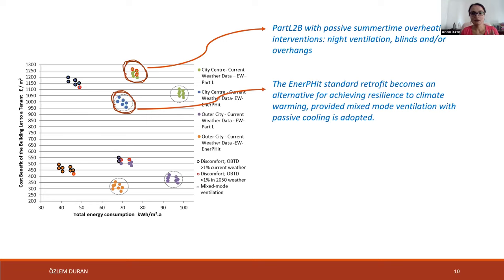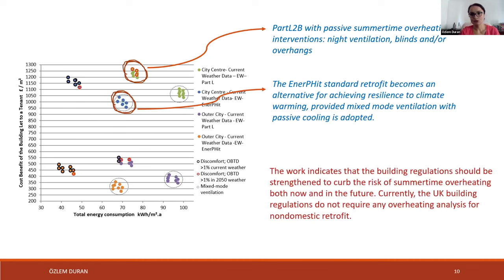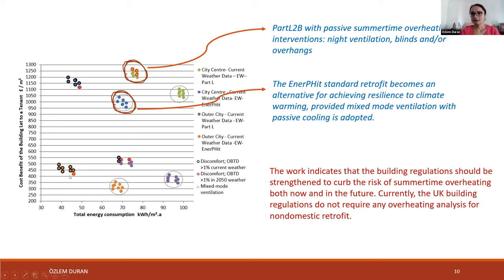In conclusion, this work indicates that building regulations should be strengthened to curb the risk of summertime overheating both now and in the future. Currently, UK building regulations do not require any overheating analysis for non-domestic retrofits. Thank you very much for listening.